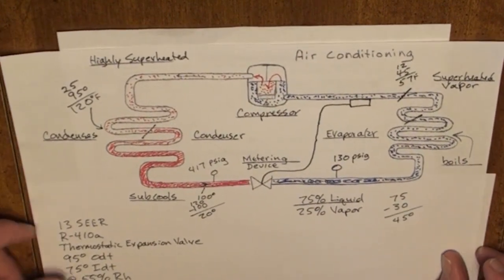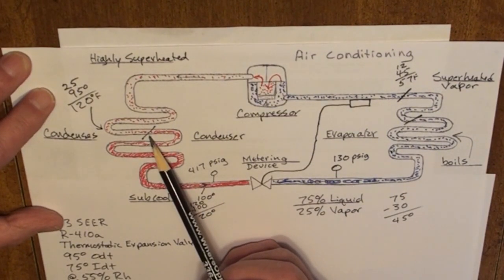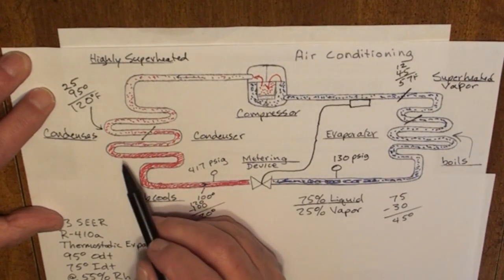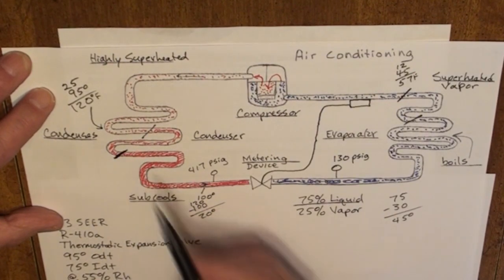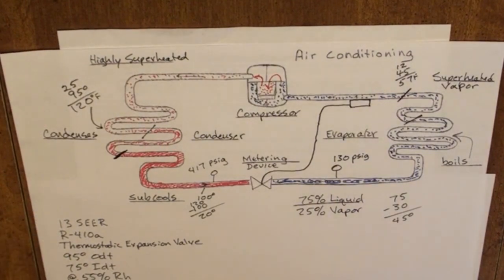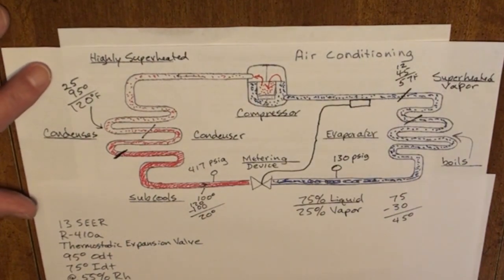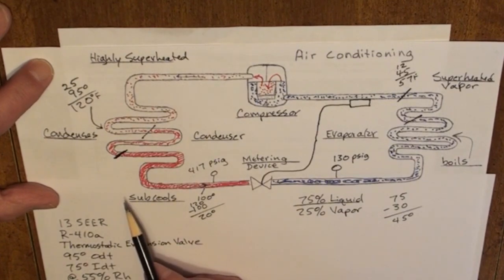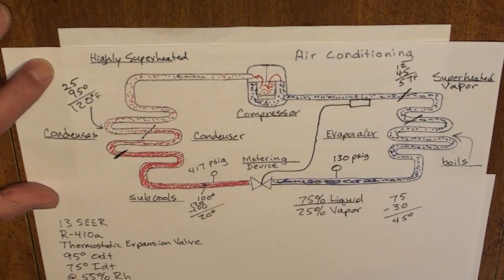Subcooling is defined as the temperature of a liquid refrigerant when it's cooled below its condensing temperature. Here, the refrigerant condenses back into a liquid, and once we have no more vapor, the refrigerant takes on sensible heat below the condensing temperature. A properly charged system on a 95-degree day would give us 20 degrees of subcooling.